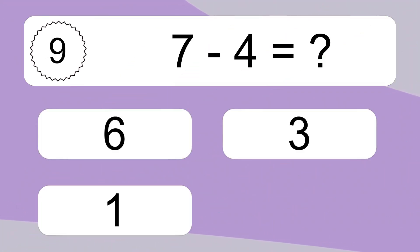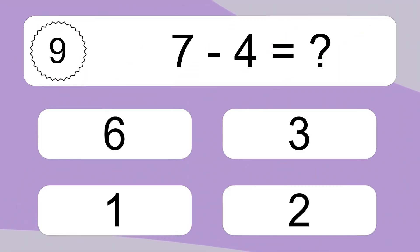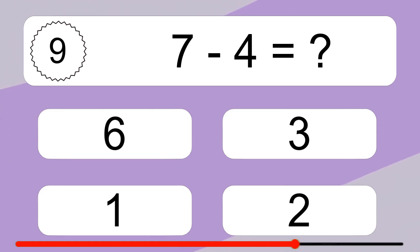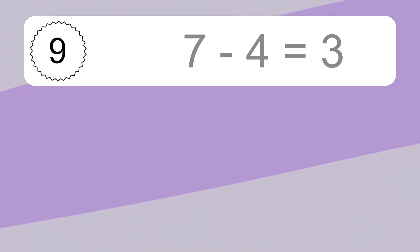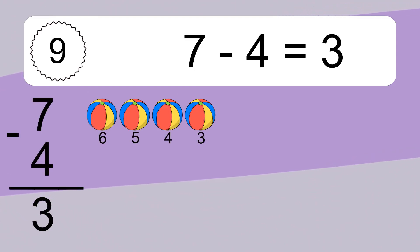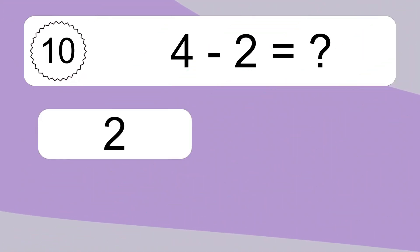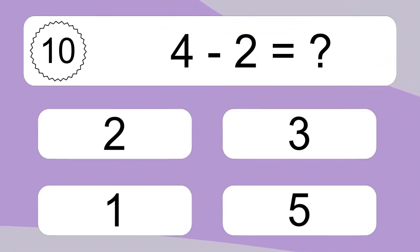7 minus 4 equals what? 7 minus 4 equals 3. Let's count it. 6, 5, 4, 3. 4 minus 2 equals what?